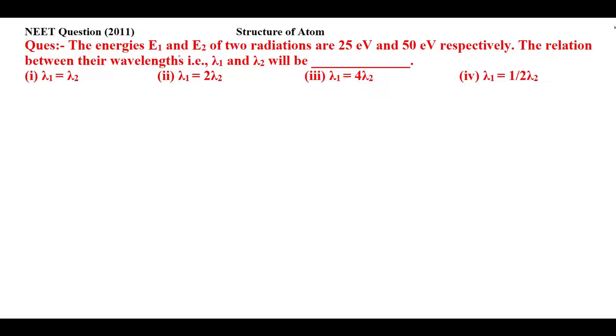The energies of two radiations are 25 electron volts and 50 electron volts. For this I'll use the relation E = hc/λ.